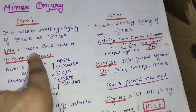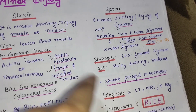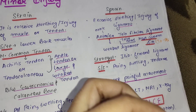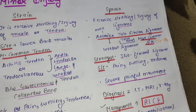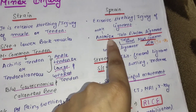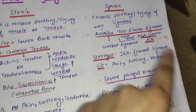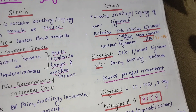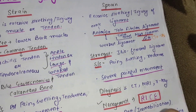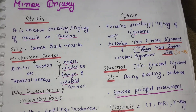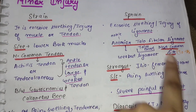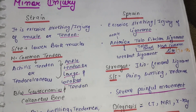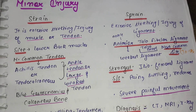Now strain की main site — जहाँ पर यह अक्सर होता है — mainly lower back muscles को सबसे ज़्यादा involve करता है strain, यहाँ पर strain होने के सबसे ज़्यादा chances होते हैं. And sprain के अंदर anterior talofibular ligament यह इसकी most common site होती है — यह weakest ligament होता है और इसके सबसे ज़्यादा chances होते हैं injured होने के.